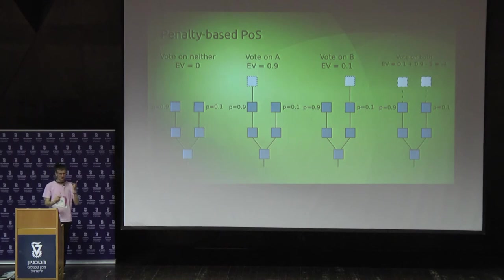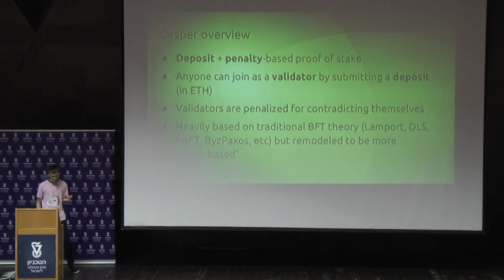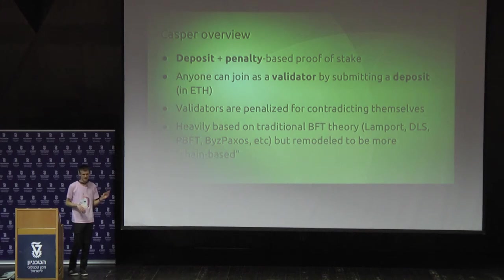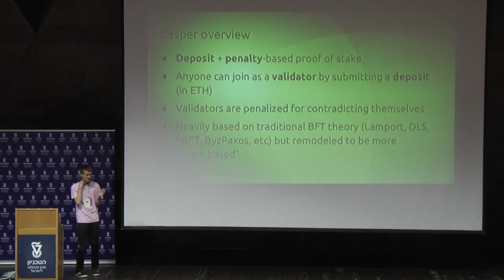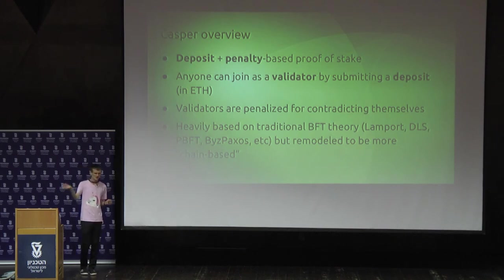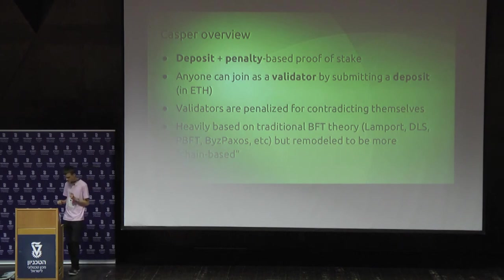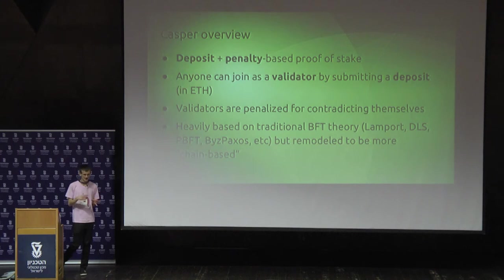That's intuitively the simple kernel of how to solve nothing-at-stake, but we can actually go further. There is another major school of proof of stake — the one Ethereum research is currently looking to use for its next major version — which is deposit-and-penalty-based, traditional BFT-based proof of stake. The idea is that first you have a validator set: the set of people currently participating in consensus. Anyone can join as a validator by submitting a deposit — some Ether into a smart contract — and after some period of time you get inducted and become a validator. Validators are penalized for contradicting themselves.